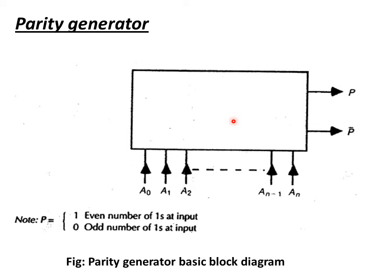In order to get the p output, if we want p equal to 1 then an even number of 1s should be present at the input bits. If p is equal to 0 then an odd number of 1s should be present. The output p completely depends upon the number of 1s present in the inputs. If they are even, p equals 1; if odd, p equals 0.